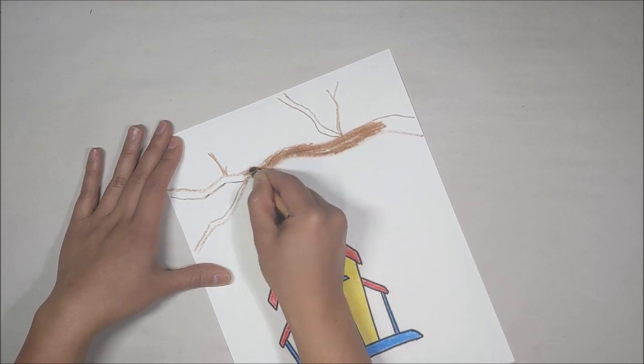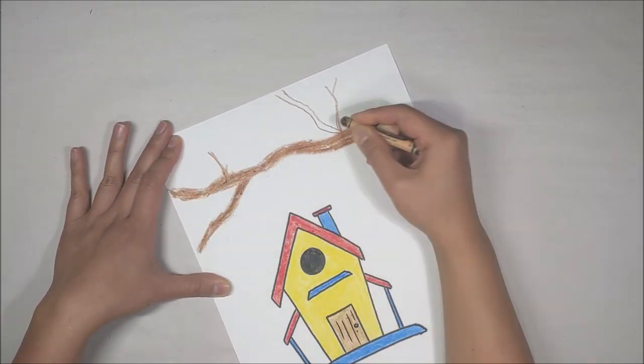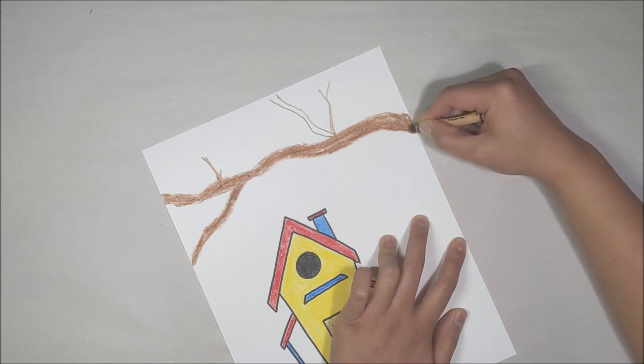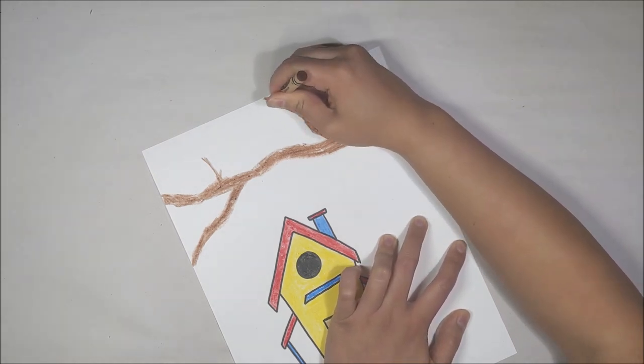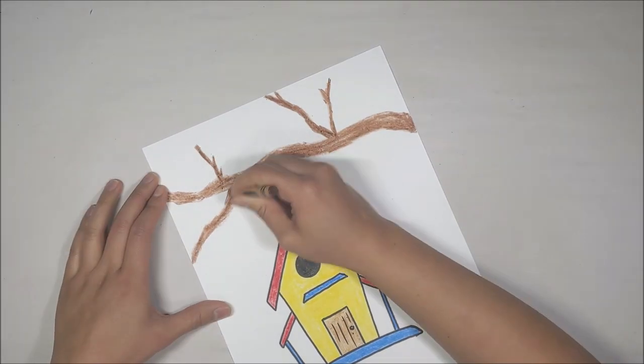Use that same brown, color in the branch. Since I'm using crayons, I want really dark colors so I need to press down using high pressure to create that dark brown color.